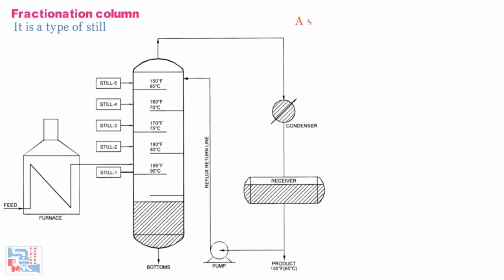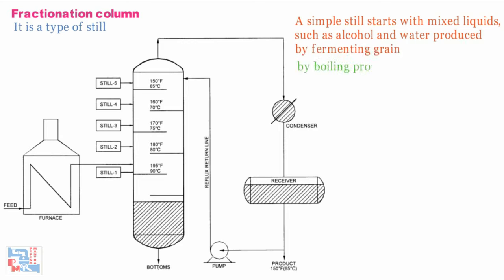A fractionation column is a type of still. A simple still starts with mixed liquids such as alcohol and water produced by fermenting grain and by boiling produces a distillate in which the concentration of alcohol is many times higher than in feed. In petroleum industry mixtures of not only two but many components are dealt with.